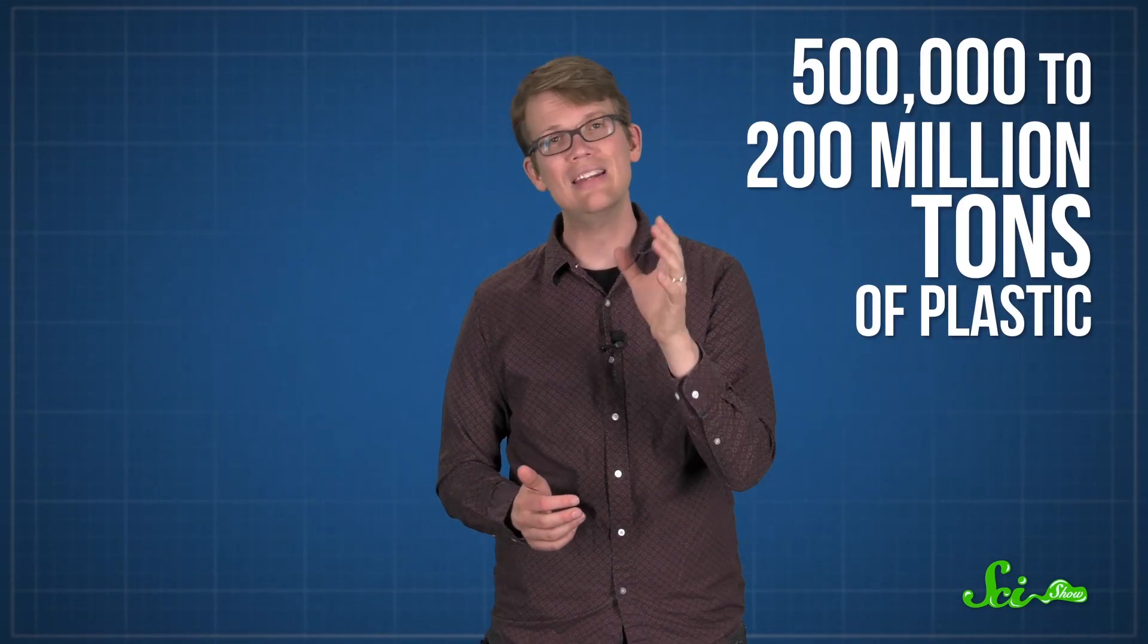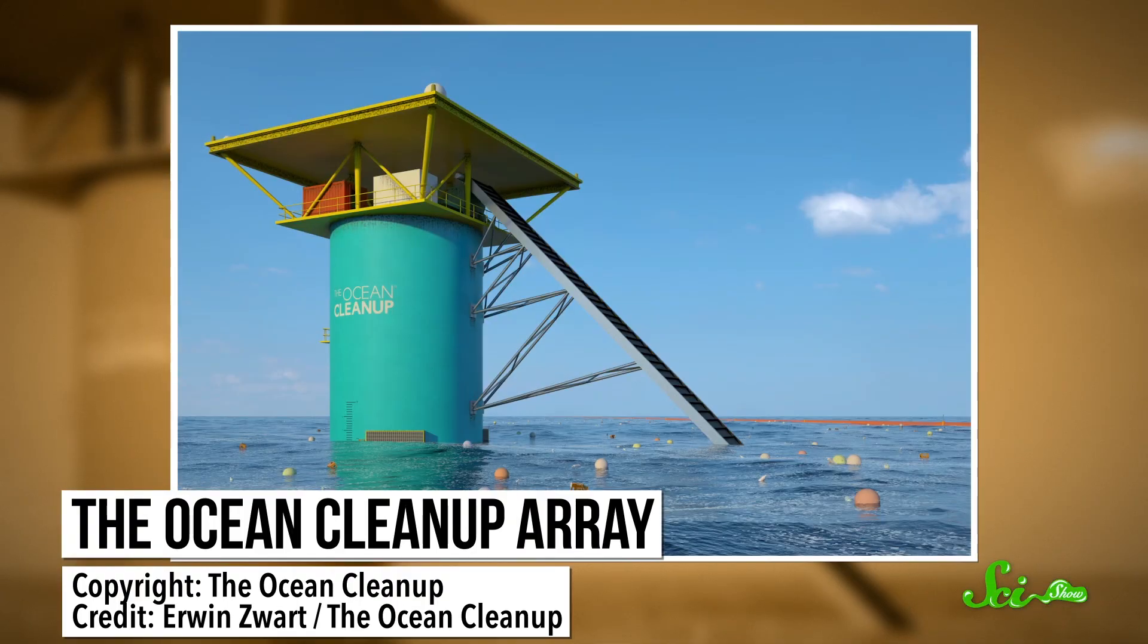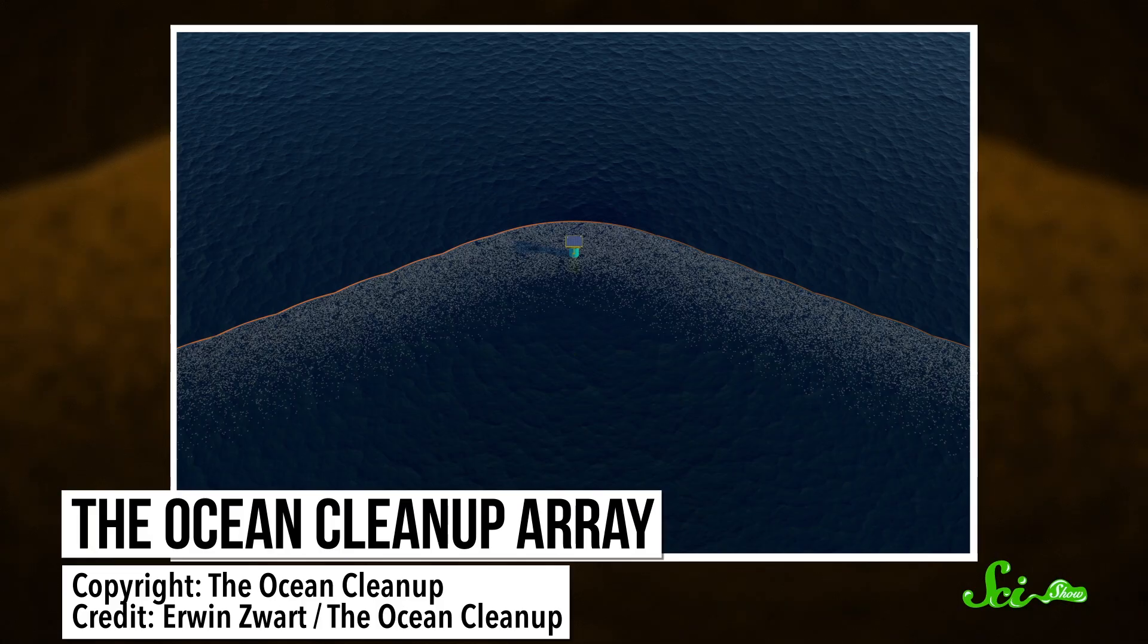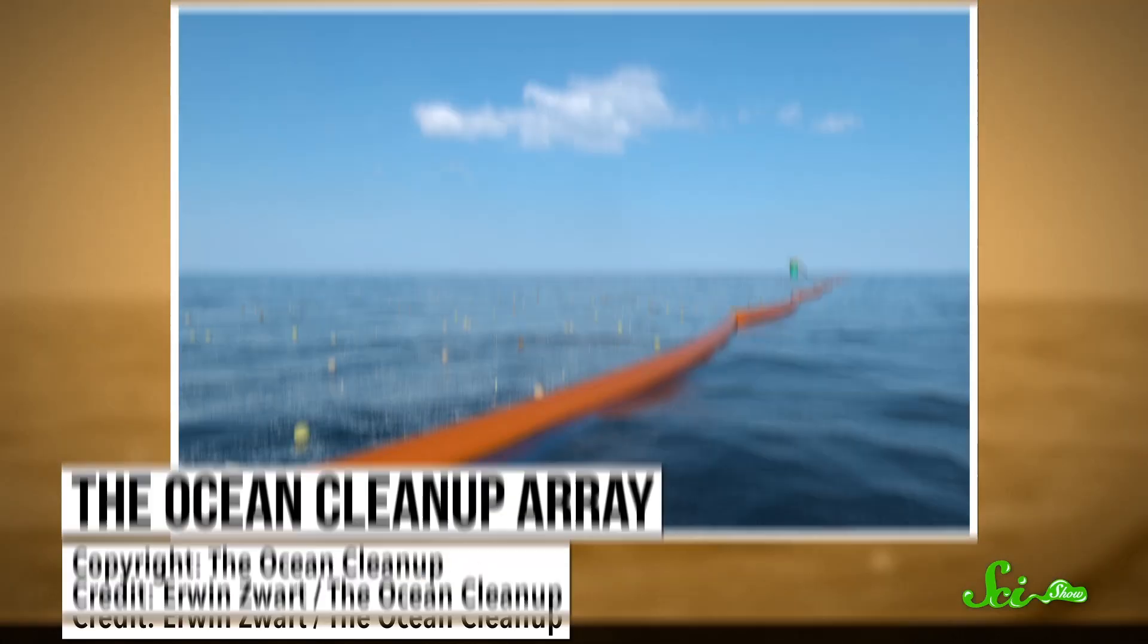Researchers estimate that combined, these five patches contain anywhere from 500,000 to 200 million tons of plastic. So one option would be to start cleaning up the oceans by targeting these monstrosities, like the Ocean Cleanup Project developed by Boyan Slat when he was a teenager. After many research expeditions, Slat came up with a giant V-shaped prototype. Each arm of the V is a floating boom with a trailing, submerged screen, designed to passively collect debris using ocean currents.